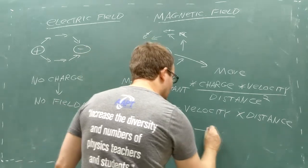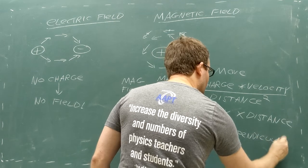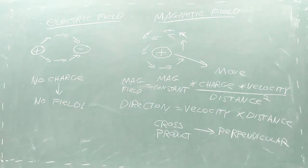The cross product takes in two vectors and produces a third vector that points at a right angle to the first two. Python has a built-in cross product which we will use to carry out this multiplication.